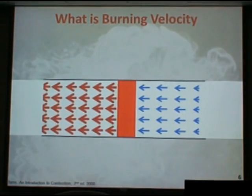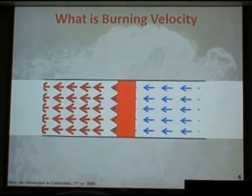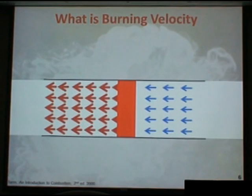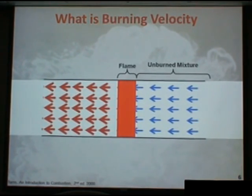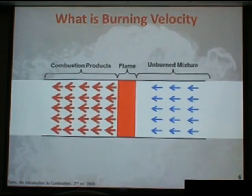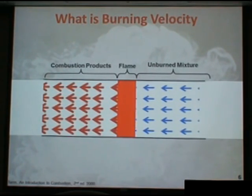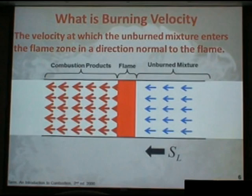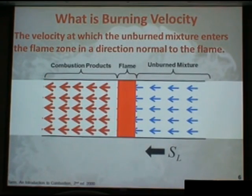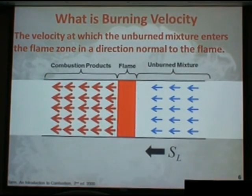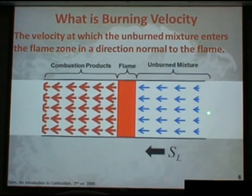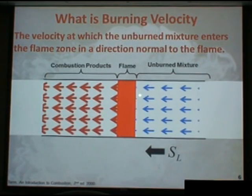We need to define what burning velocity is. If we have this scenario where we have an unburned mixture going into a flame and then combustion product coming out behind the flame, we can define the burning velocity as the velocity at which the unburned mixture enters a flame zone in the direction normal to the flame zone. Basically, the velocity at which an unburned mixture is entering the flame.